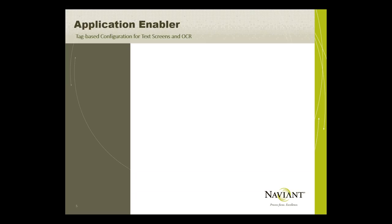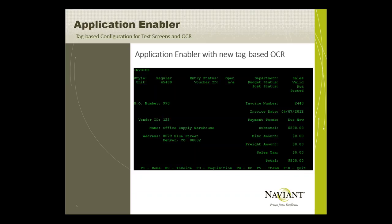In OnBase 15, there are a few new enhancements that will help connect difficult-to-enable applications with OnBase using Application Enabler. One of the new ones is tag-based configuration for text screens and OCR. Text screens have been enabled for years with App Enabler, but sometimes it can be difficult if the information on the screen wasn't consistently in the same location. For instance, if the post status in the upper right changes from 'not posted' to 'posted,' the 'not' is deleted and everything below it shifts up a line.